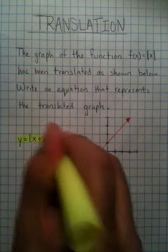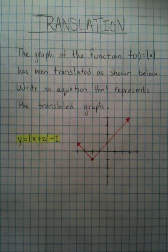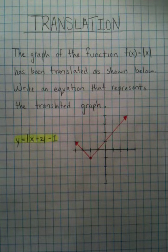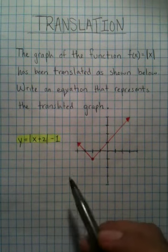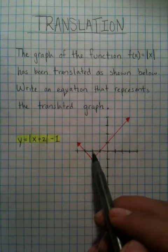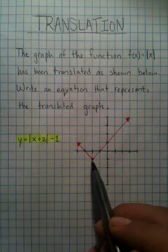There it is. That's it. And you can get that by just looking at the picture. Now, you moved over 2 to the negative and down 1.